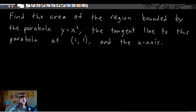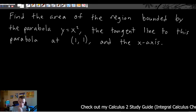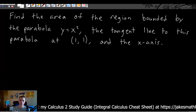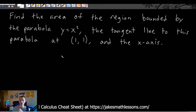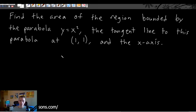Find the area of the region bounded by the parabola y equals x squared, the tangent line to this parabola at the point (1, 1), and the x-axis. We have to find a tangent line equation first, and then use that tangent line equation to find the area between the two curves. This is pretty interesting because it combines topics from differential calculus and integral calculus into one problem.